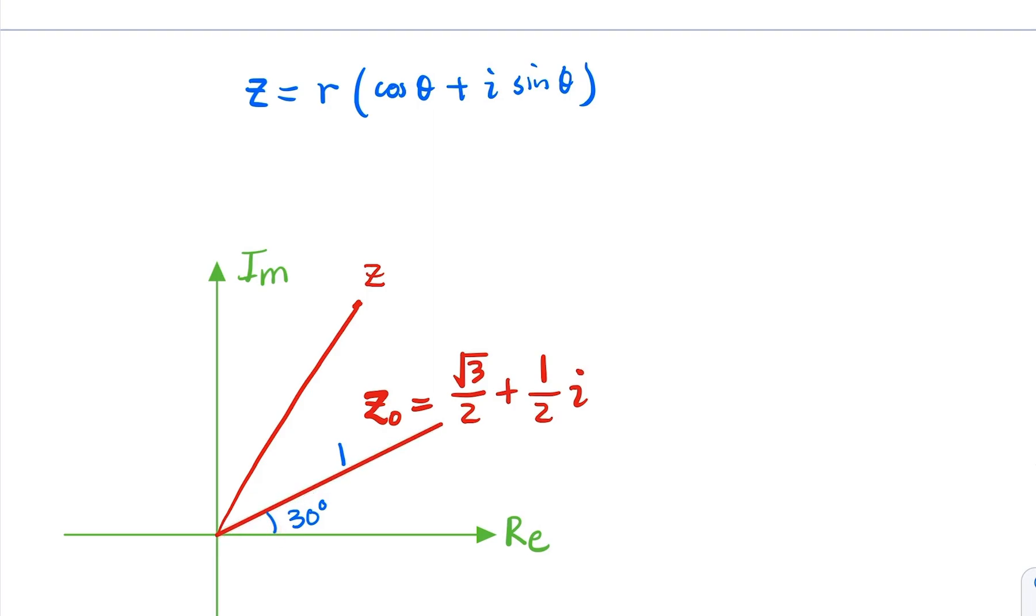So the product rule tells us that the new value would be equivalent of rotating z here by 30 degrees. So it could bring it somewhere here. So let's say that's the new one. That would be 30 degrees. And the radius is going to be the same, r. Of course, this is not in scale. Alright, so let's write it down.